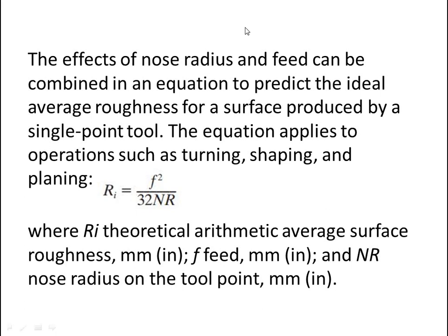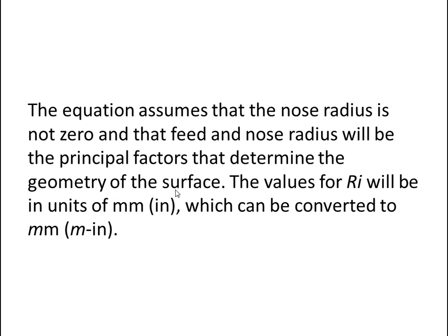The ideal surface roughness equation is: Ri = F² / 32Nr, where Ri is the theoretical arithmetic average surface roughness expressed in millimeter or inch, F is the feed expressed in millimeter or inch, and Nr is the nose radius. The equation assumes that the nose radius is not zero and that the feed and nose radius will be the principal factors determining the geometry of the surface. The values for Ri will be in units of millimeter or inch, which can be converted to meters or inches.